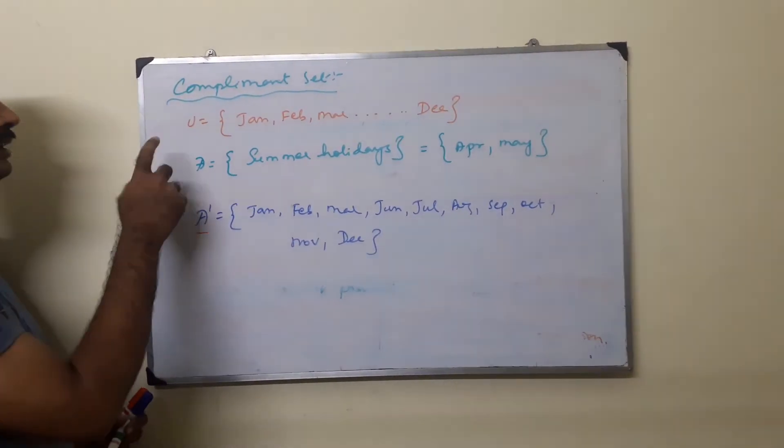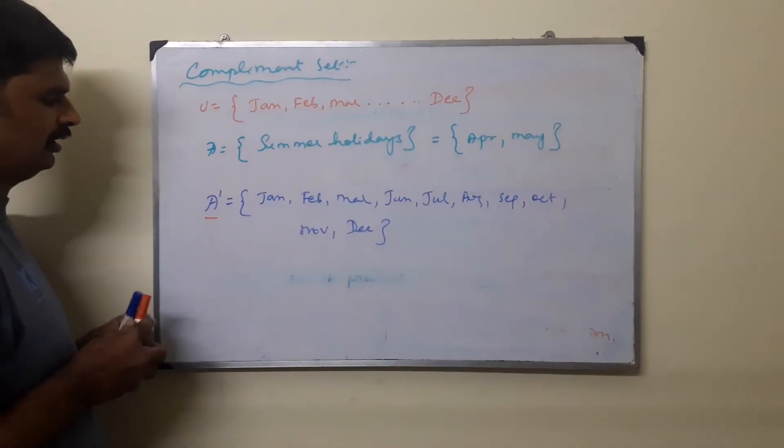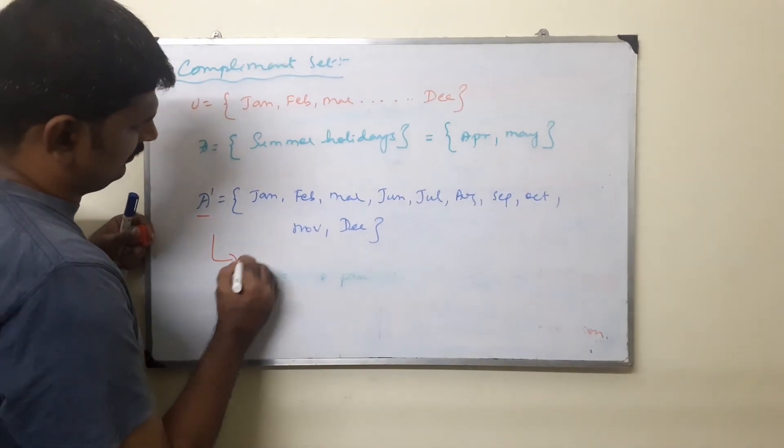A prime is a complement of set A, complement of set A. That is called complement set.